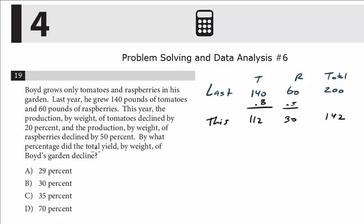This is where you need these totals. Now the question is asking, by what percentage did the total yield decline? Any time you're doing percentage increase or decrease, the first step is what is the original starting value before any change?